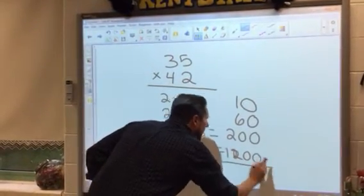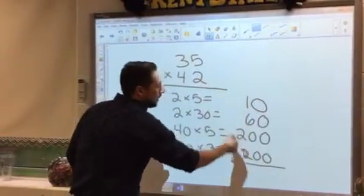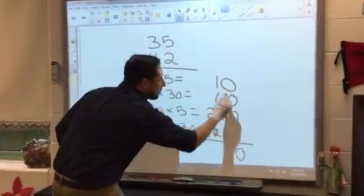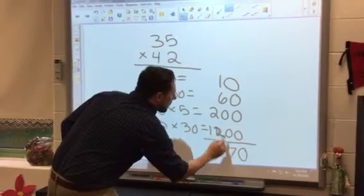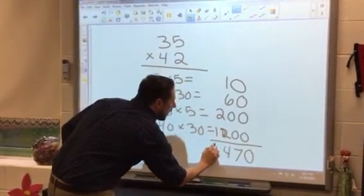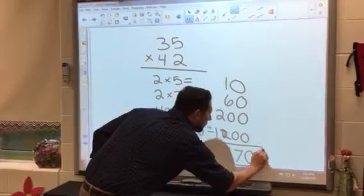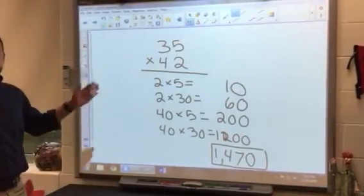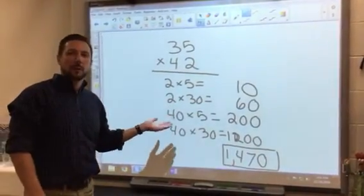This is a 2. Then I add these up, and if you line it up by place value it makes it nice and easy. You don't have to rewrite the numbers. We've got 7, 4, and this is a 1. So our answer is 1,470. That's how you solve multiplication problems using the partial products method.